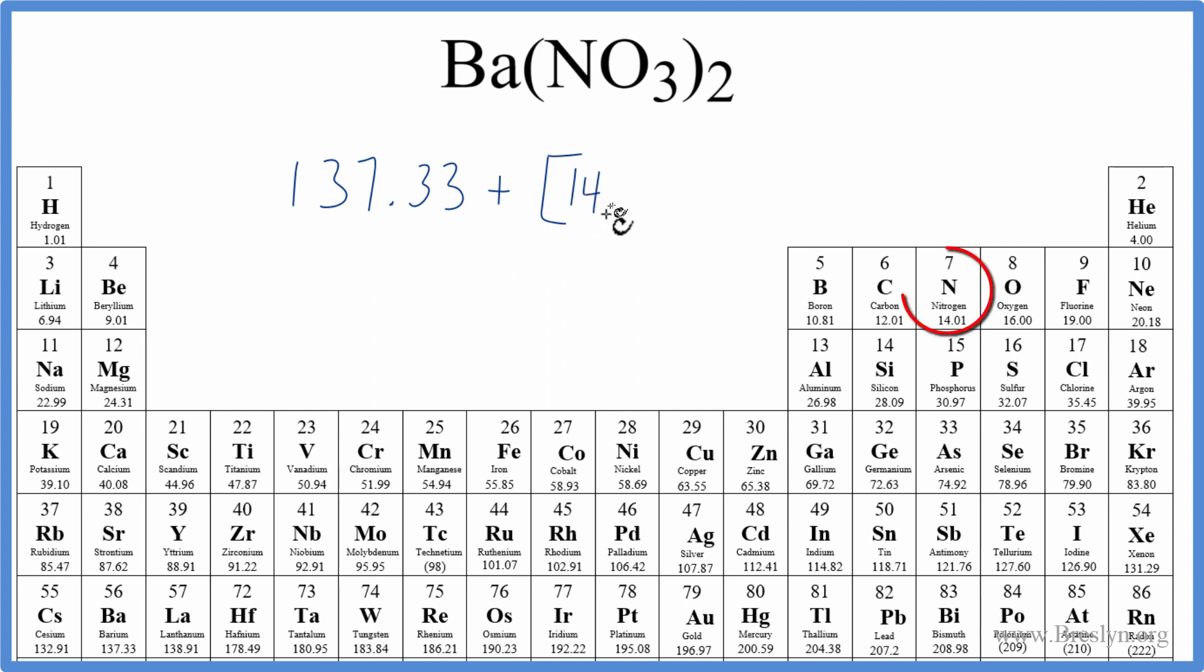Nitrogen, that's 14.01, plus oxygen, 16.00 grams per mole. We have three oxygens, so we'll multiply that by three.